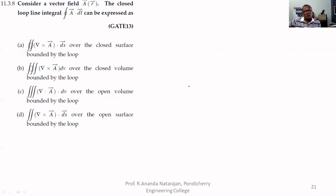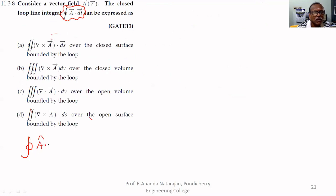Consider a vector field A. A closed loop integral can be expressed as — the answer is D. The contour integral of A-hat dot dL must be equal to the surface integral of curl of that vector dot dS.